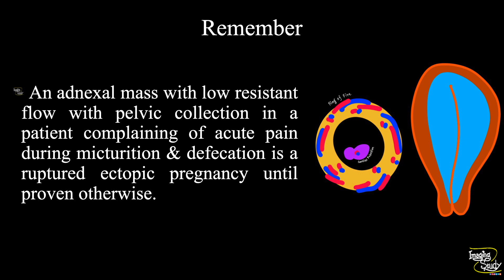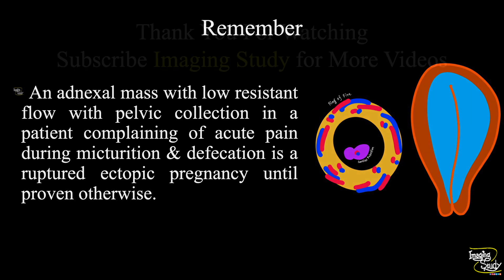The take-home message: an adnexal mass with low-resistant flow and pelvic collection in a patient complaining of acute pain during urination and defecation is a ruptured ectopic pregnancy until proven otherwise. Color Doppler is a very useful tool in these cases when you have confusion with other differential diagnoses. Thank you for watching. Subscribe to our YouTube channel for more. See you on the next one — have a nice day!